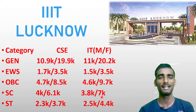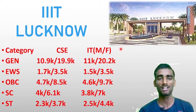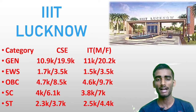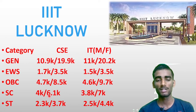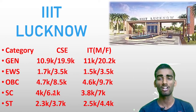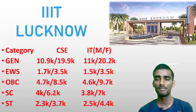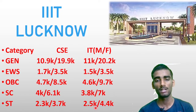Now, IIIT Lucknow — a beautiful campus IIIT in Uttar Pradesh. For General: CSC 10.9k–19.9k, IT 11k–20.2k. EWS: CSC within 3.5k, IT 1.5k–3.5k. OBC: CSC 4.7k–8.5k, IT 4.6k–9.7k. SC: CSC 4.4k–6.1k, IT 3.8k–7k. ST candidates: CSC 2.3k–3.7k, IT 2.5k–4.4k. These are strong chance cutoffs — note that they vary year by year.